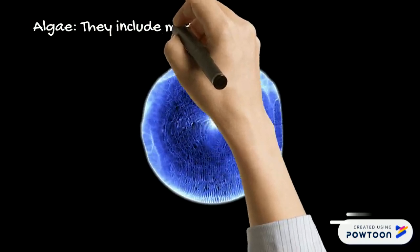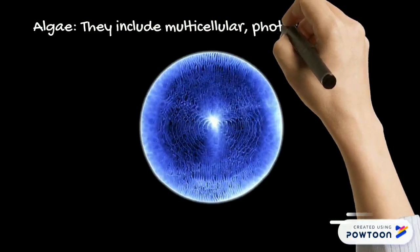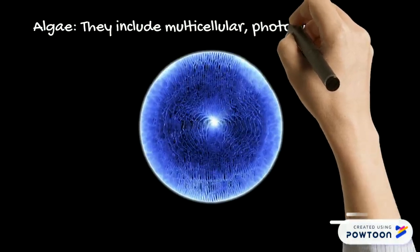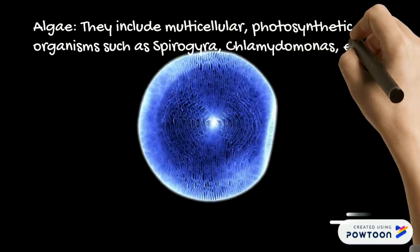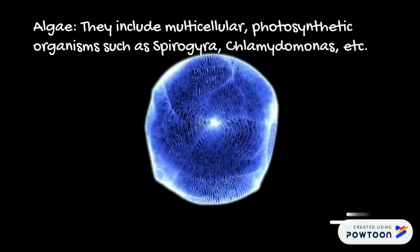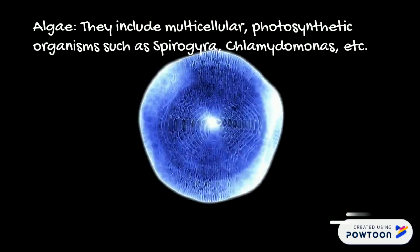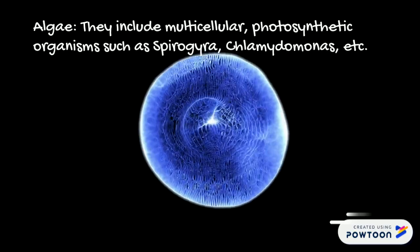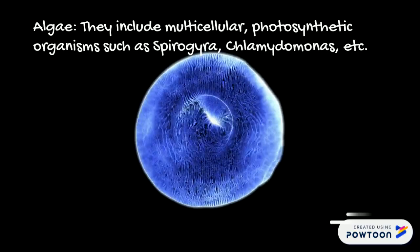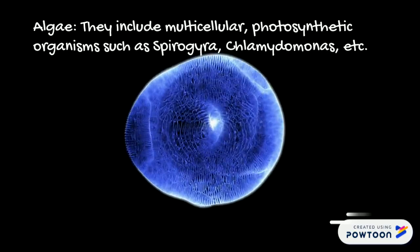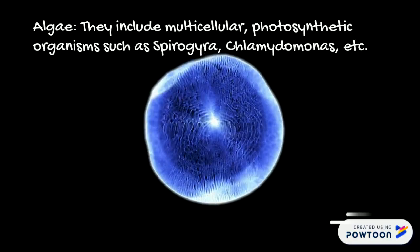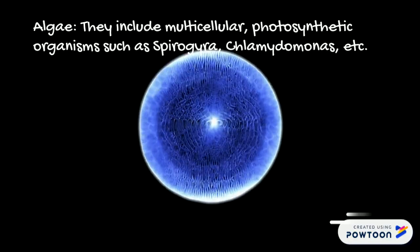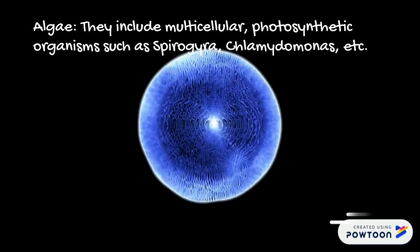The final group is algae. Algae are multicellular and photosynthetic organisms. They are considered photosynthetic because they contain chlorophyll, and if they contain chlorophyll they are capable of carrying out the photosynthesis process.